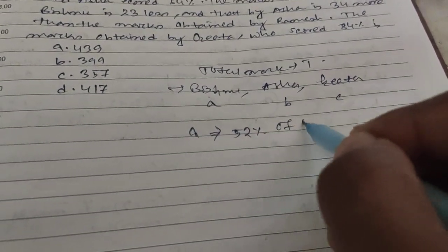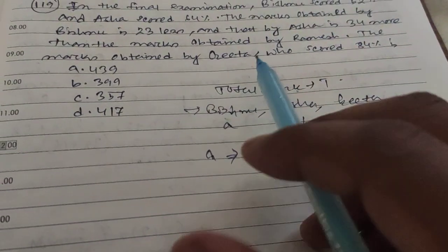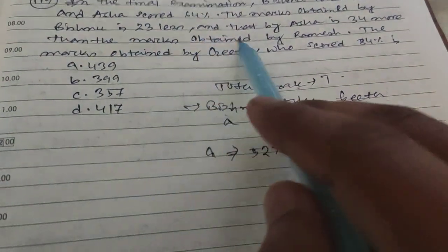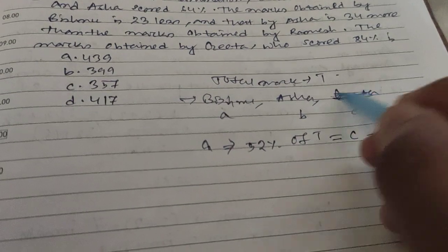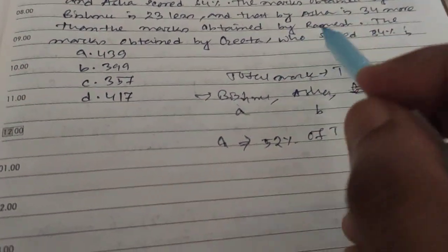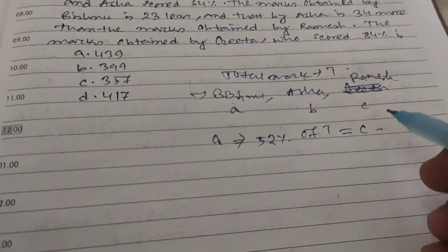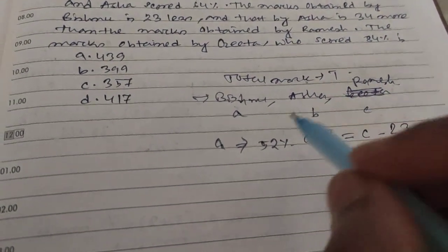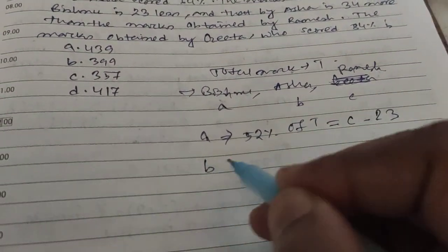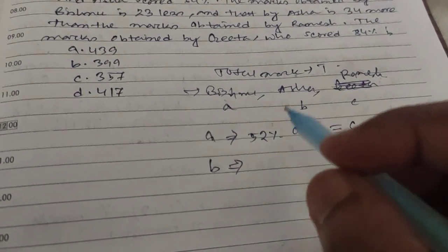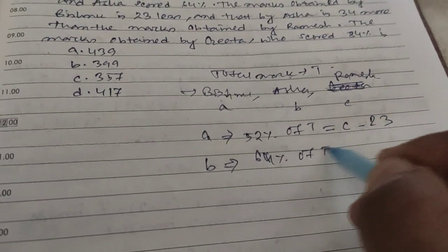For Bishnu and Asa and Ramesh, sorry this will be Ramesh. And Asa is 34 more than obtained by Ramesh, so C minus 23 for Bishnu's score. And for Asa's score this is 64 percent of T, which is C plus 34.